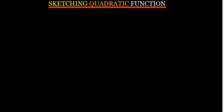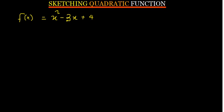What if the function is not already in completed square form? Say f(x) equals x squared minus 3x plus 4. First, make sure the coefficient of x squared is 1 — this one already is. We complete the square by expressing it in the form a(x + c) squared + d.